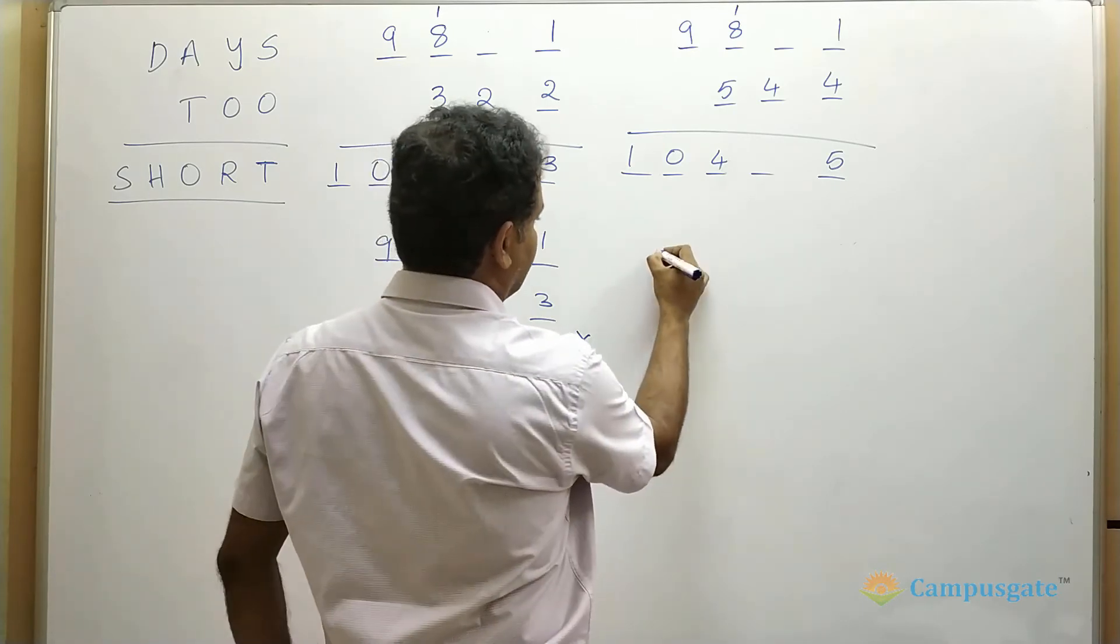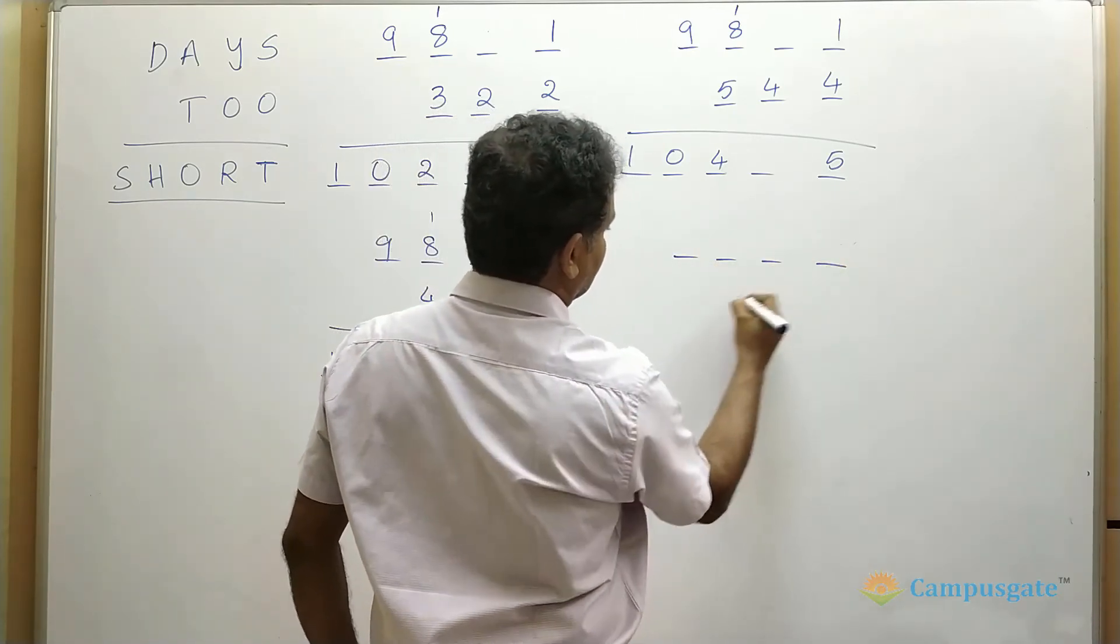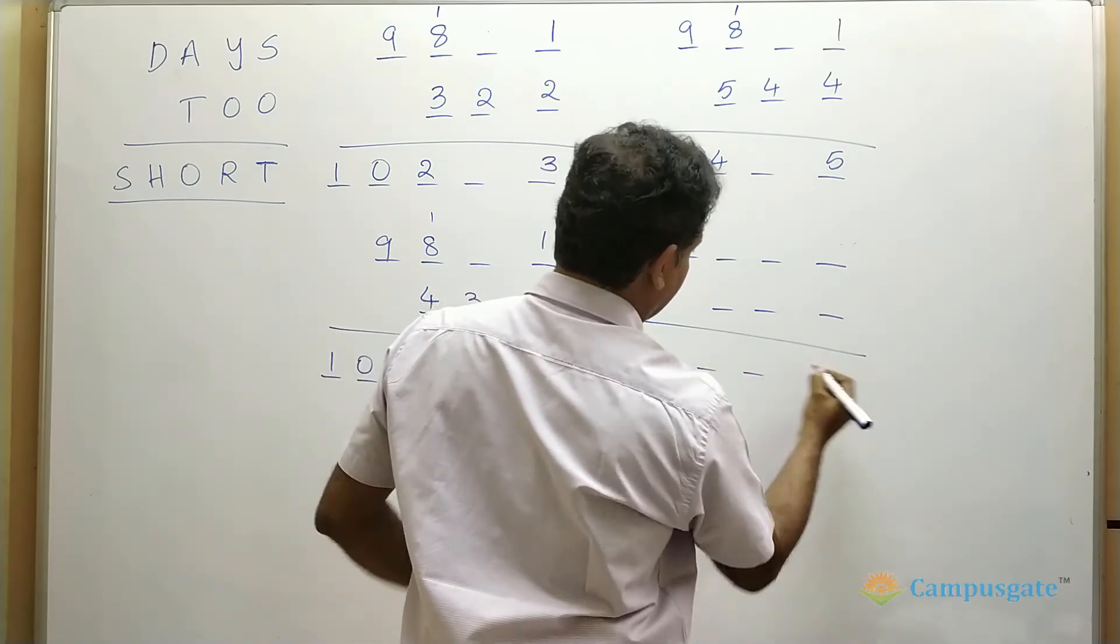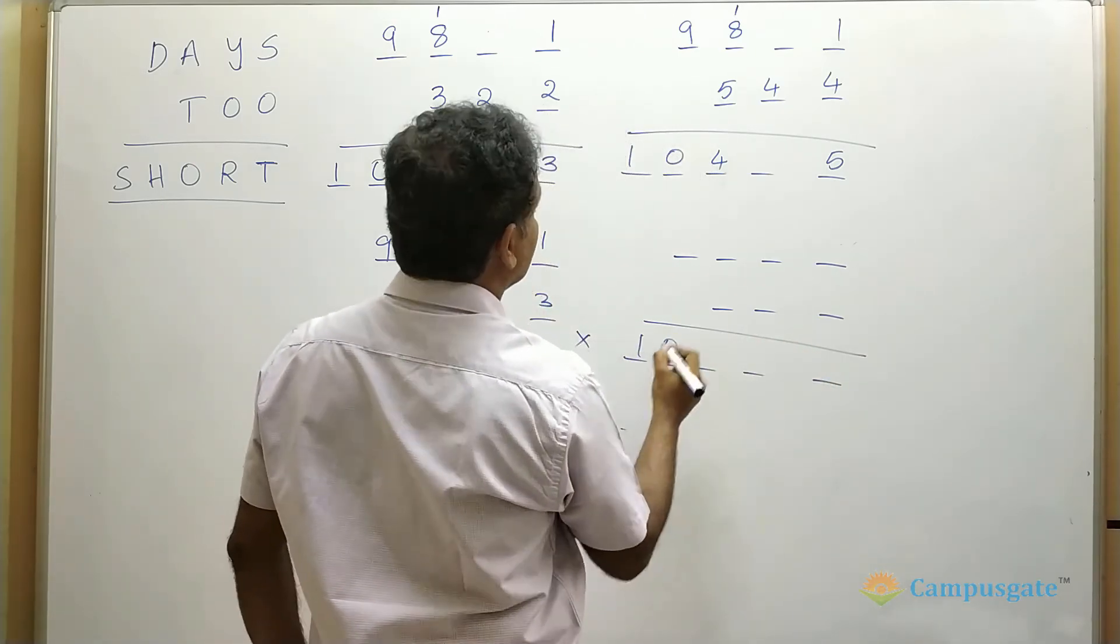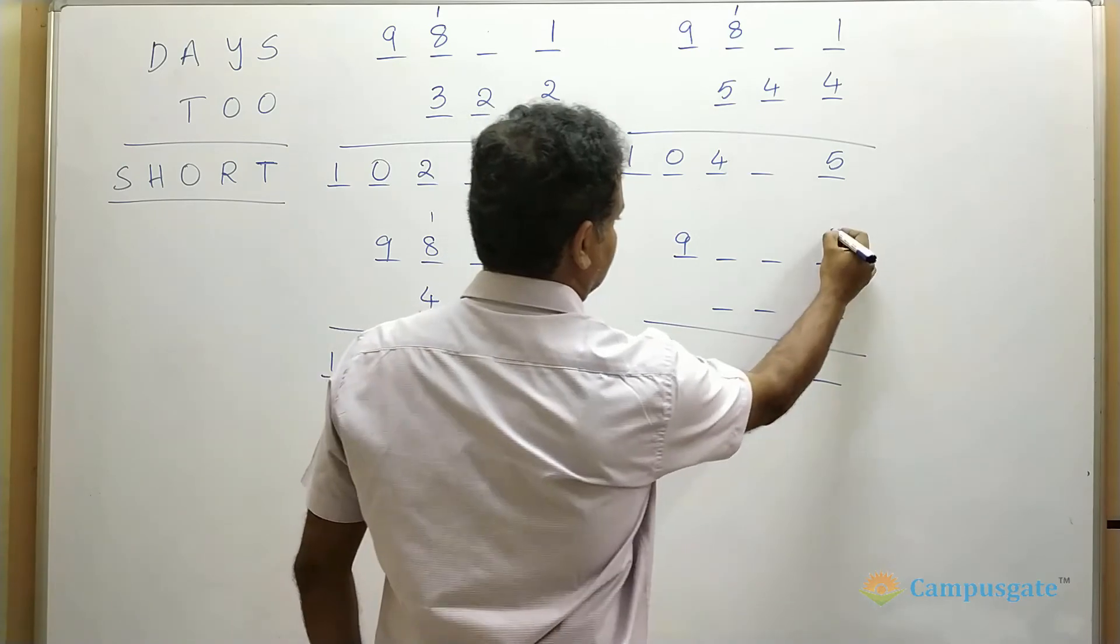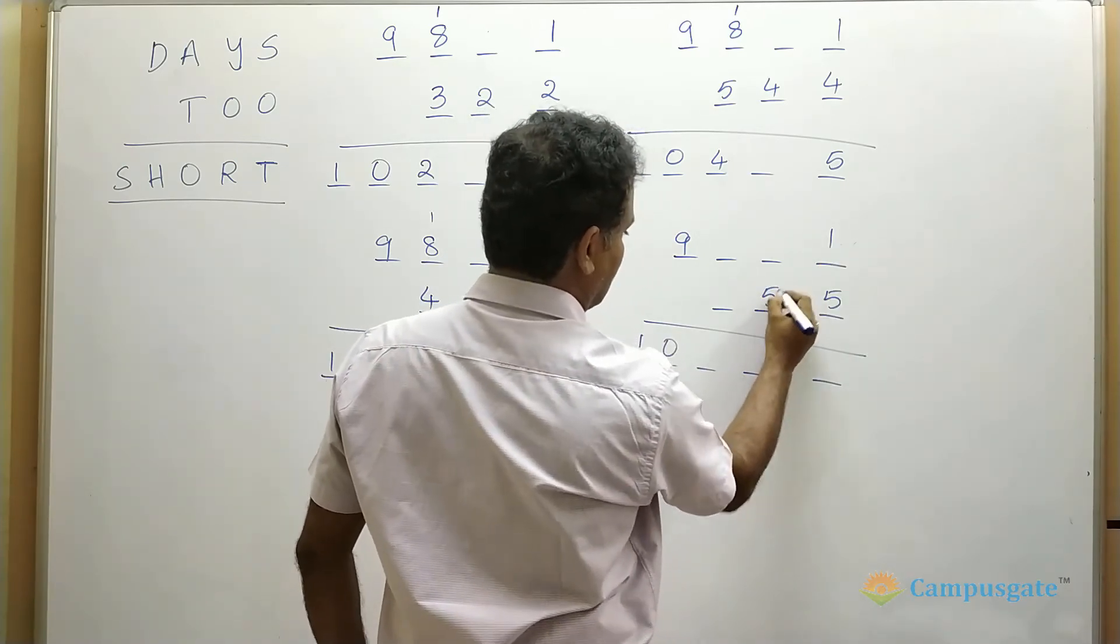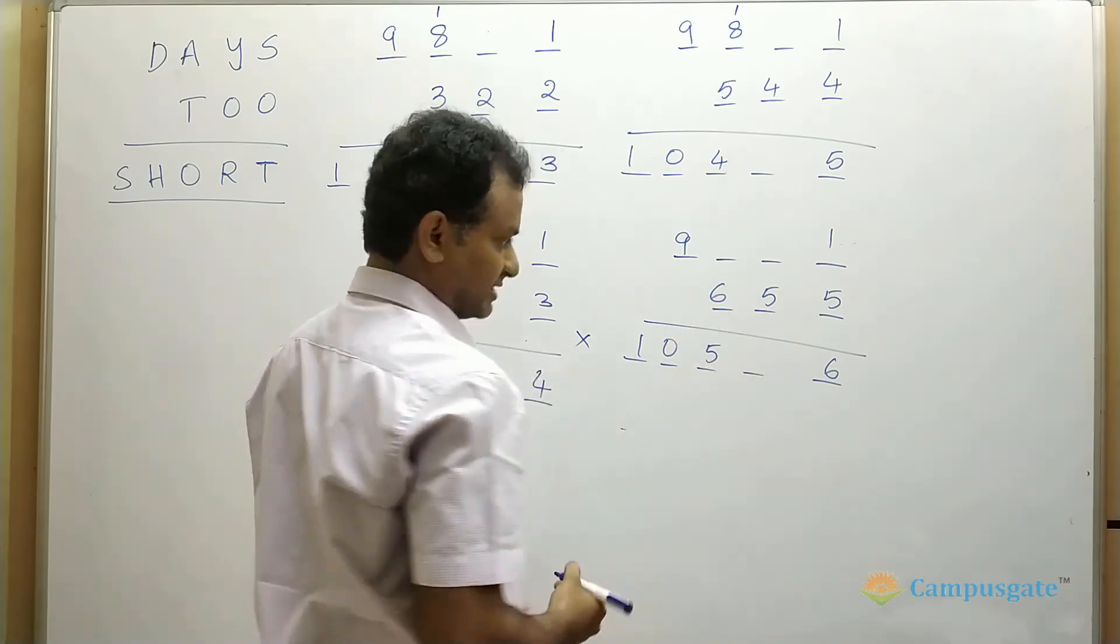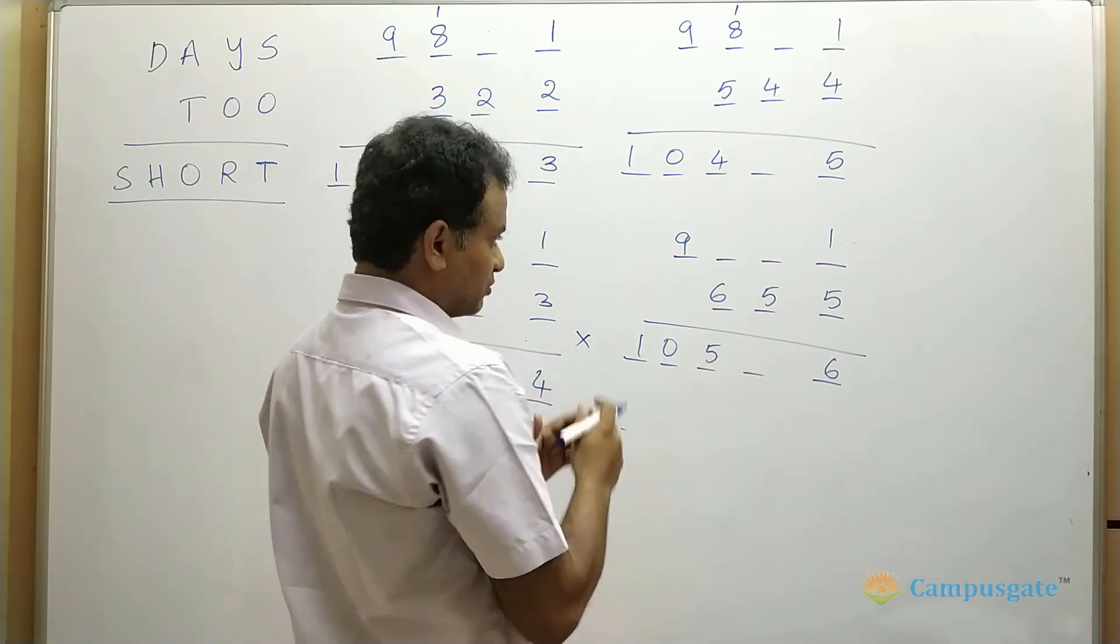So we can take the next value 5. We will take the next value, we will see how it works. So let us put values of 5 here. That means it should be 6. So T equals 6.